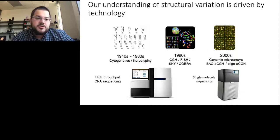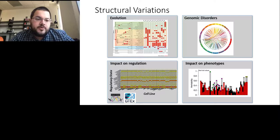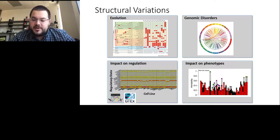Structural variants are generally very important across different aspects of medicine and biology — in an evolutionary context we can speak about gene gains and gene losses, in genomic disorders such as Mendelian diseases, or in cancer, where we are currently writing up a publication on SKBR3 investigating genomic disorders and amplification of certain oncogenes. We're also studying the impact of structural variants on regulatory units in collaboration with the GTEx and ENCODE consortia, as well as phenotypic changes influenced by structural variants, as shown in a recent 2017 publication.